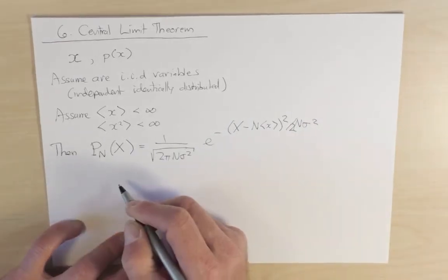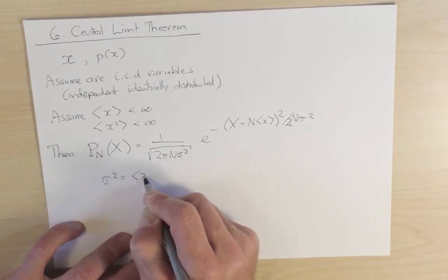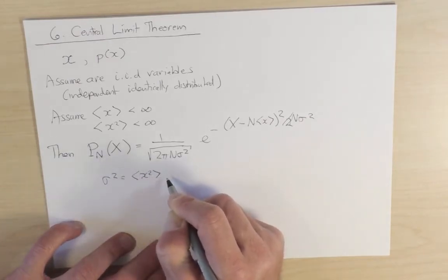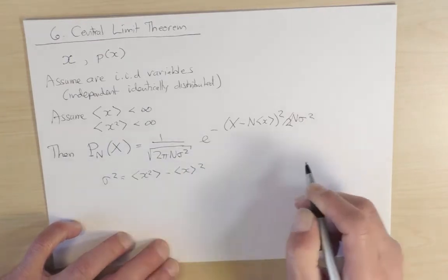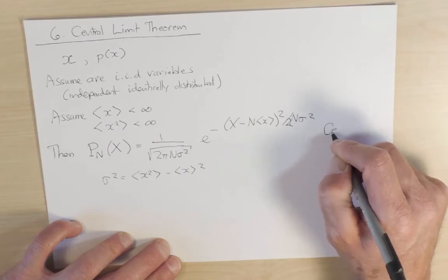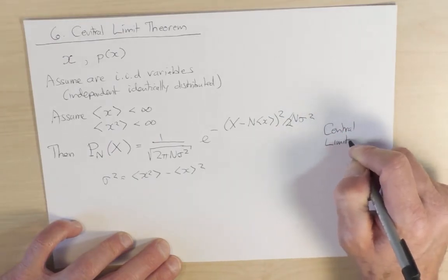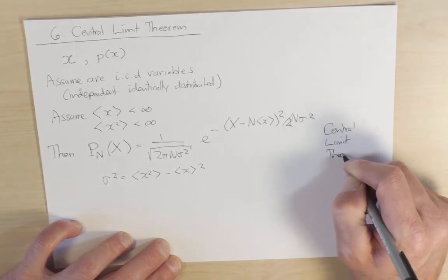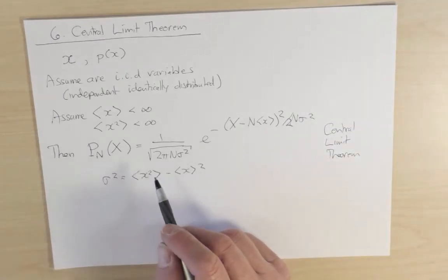Where here, sigma squared is equal to the variance in the single step distribution, so it's the difference between x squared average minus x average squared. So this statement is known as the central limit theorem. And I should say that it's holding in the limit as n is going to infinity.